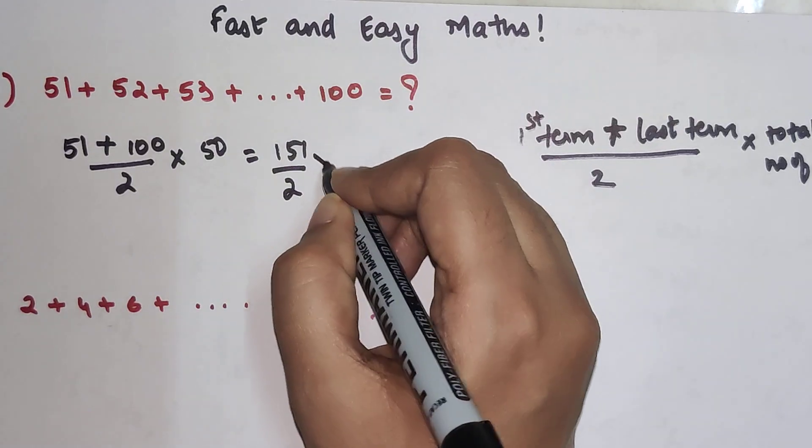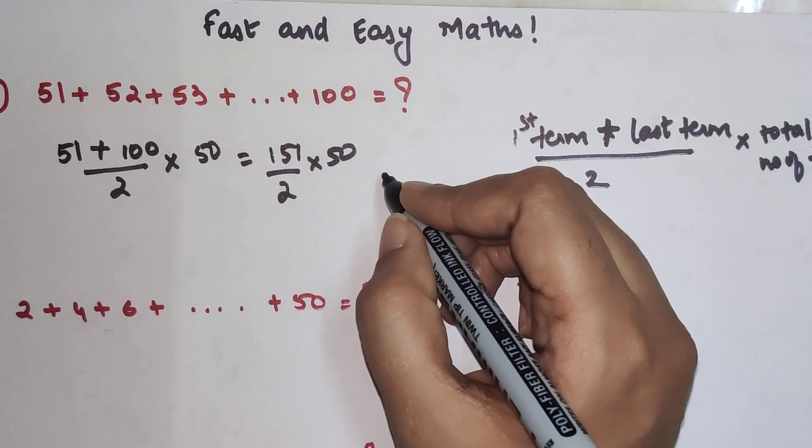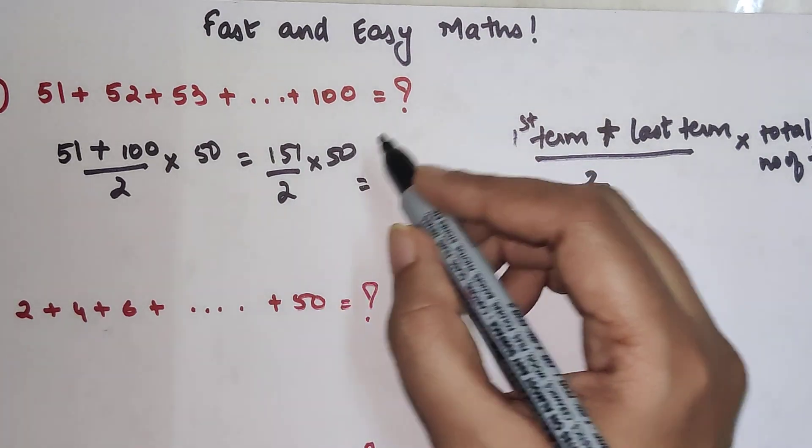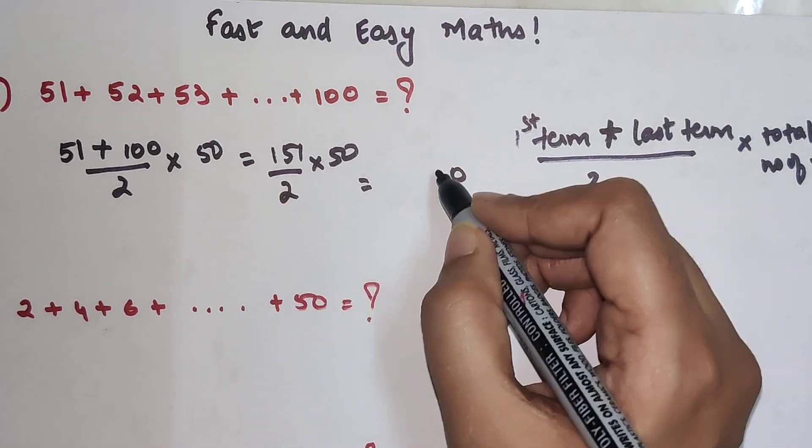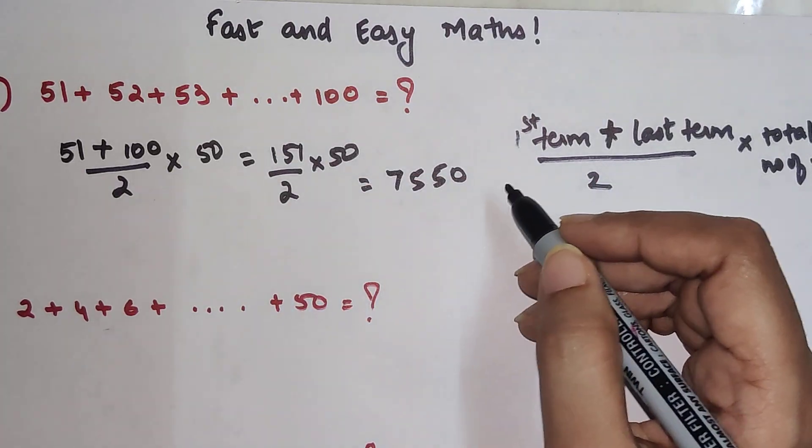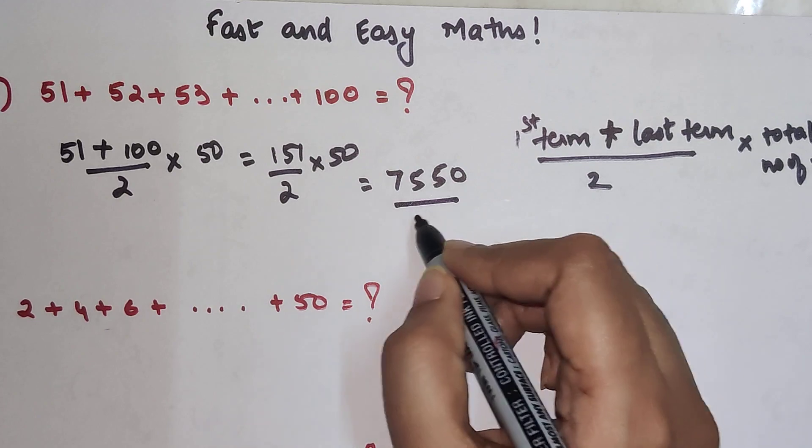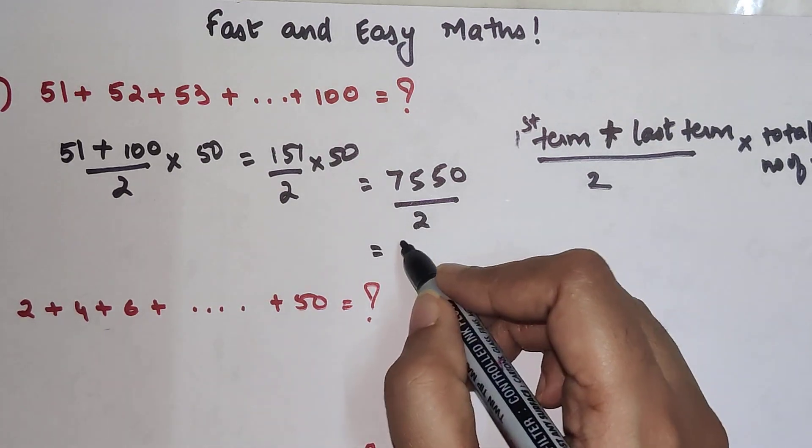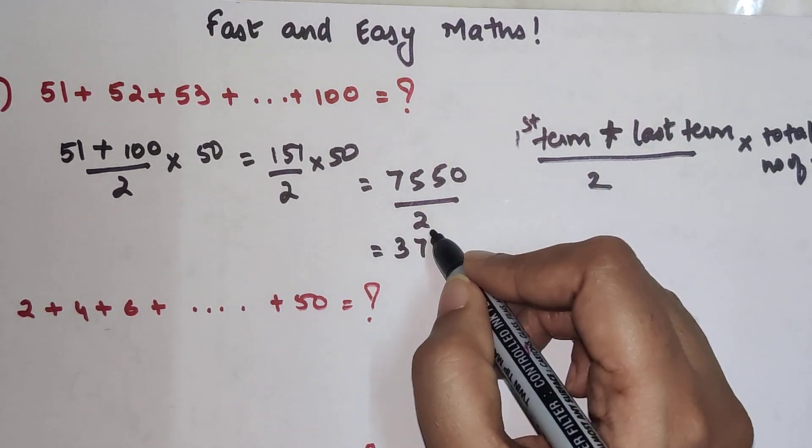We can do the multiplication first. This is 51 plus 100, which is 151. That's 0 and 55 to carry, so 7550 divided by 2. This is now coming out to be 3775.